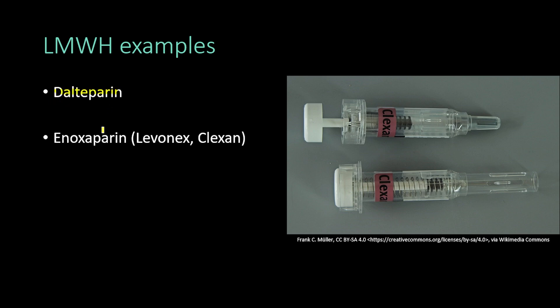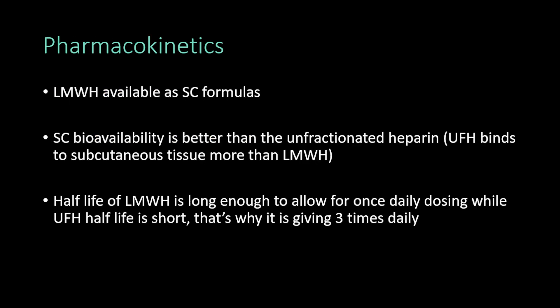Examples of these medications include dalteparin and enoxaparin. Enoxaparin has many different trade names such as Lovenox and Clexane, and both of those trade names are highly famous and are used a lot in hospitals. This picture shows a pre-filled syringe of Clexane, which is enoxaparin.